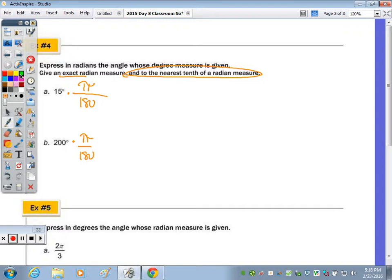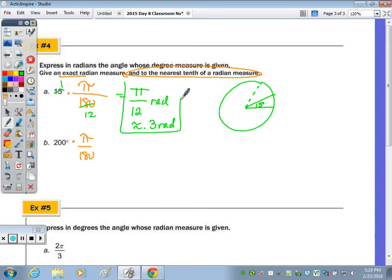So let's first find it in exact. 15 goes into itself once, goes into 180 12 times, so we end up with pi over 12 radians, which is approximately 0.3. If you looked at a circle in a 15 degree angle, that's very small, and that is just a fraction of a radian, because remember, a radian was about here, and that's not even drawn to the scale. So it just makes sense that 15 degrees is pi over 12, or 0.3 radians.